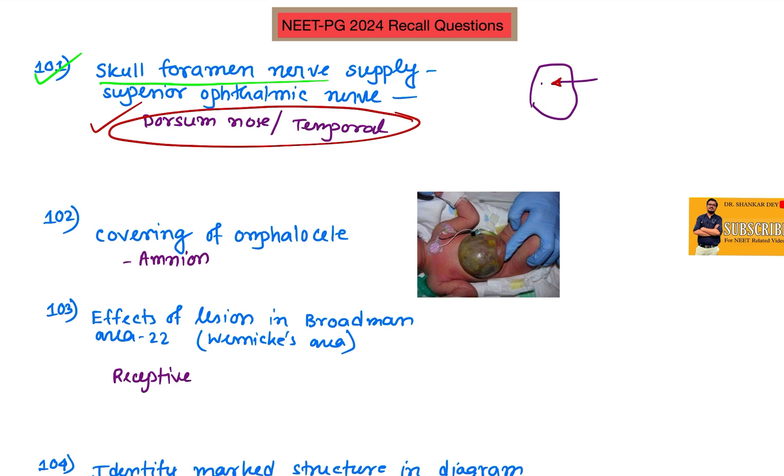The best answer would be loss of sensation of dorsal nose and temporal part, because it's related to superior ophthalmic nerve as recalled by my junior. So this will be the best option for this question.